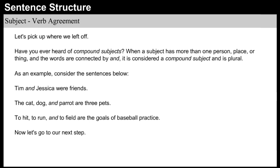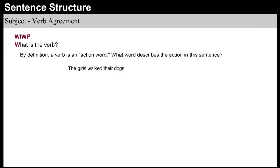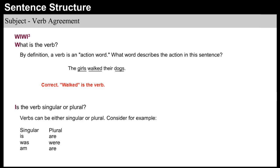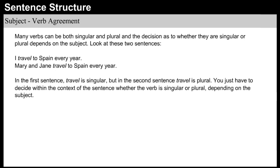Now let's go to our next step: What is the verb? A verb is an action word. What word describes the action in 'The girls walked their dogs?' Walked is the verb. Is the verb singular or plural? Verbs can be either. Singular examples: is, was, am. Plural examples: are, were. Many verbs can be both singular and plural depending on the subject. In 'I travel to Spain every year,' travel is singular. In 'Mary and Jane travel to Spain every year,' travel is plural. You just have to decide within the context of the sentence whether the verb is singular or plural, depending on the subject.